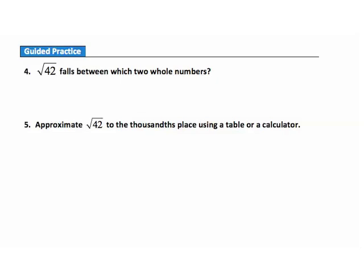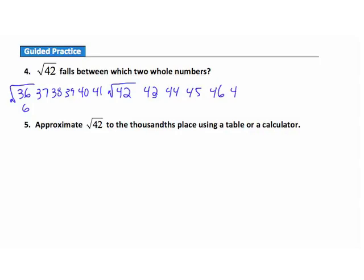Question 4: the square root of 42 falls between which two numbers? Working down from 42, we find that 36 is a perfect square — its square root is 6. Working up from 42, we find that 49 is a perfect square — its square root is 7. So the square root of 42 falls between 6 and 7: it's bigger than 6 but smaller than 7.